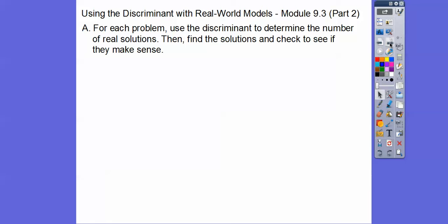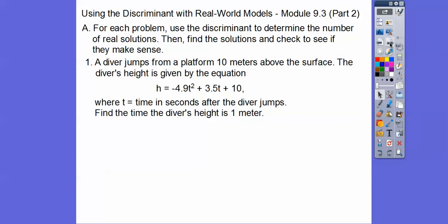So here's a problem here. For each problem, we're going to use the discriminant to determine how many real solutions there are. Remember in the last lesson, we either had two solutions, one solution, or no solutions when it was less than zero. Then we'll find the solutions and check to see if they make sense.